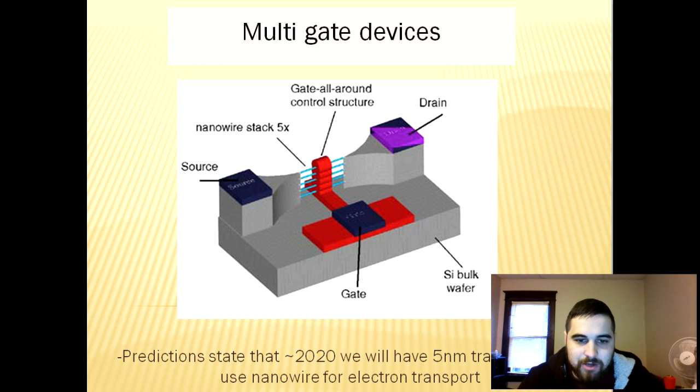These transistors have been characterized theoretically and experimentally and the transistor has been etched into nanowire which has more electron mobility than traditional silicon. Some people estimate that around 2020 we will have five nanometer transistors that use nanowires for electron mobility instead of traditional silicon.